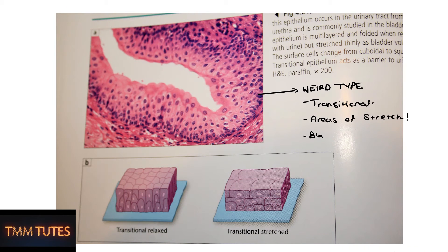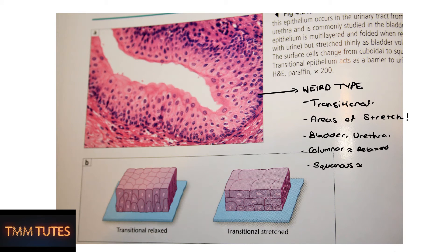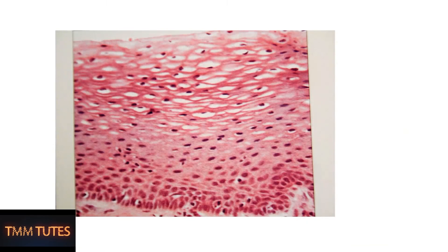This is transitional epithelium — a somewhat unusual type. There are many cells stacked all over the place, and it's usually only found in areas of stretch, like the bladder and urethra. When relaxed it's a more columnar stack, and when stretched it becomes squamous.